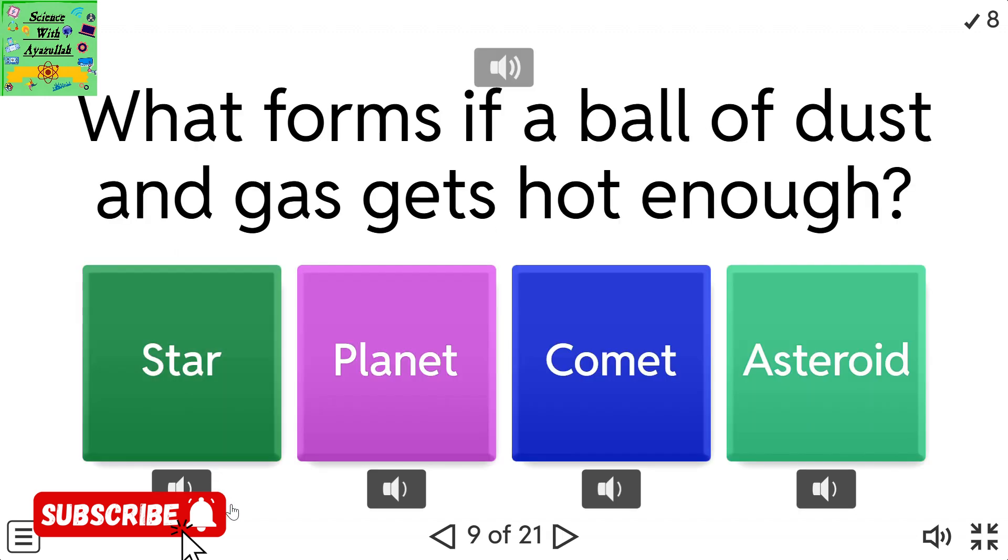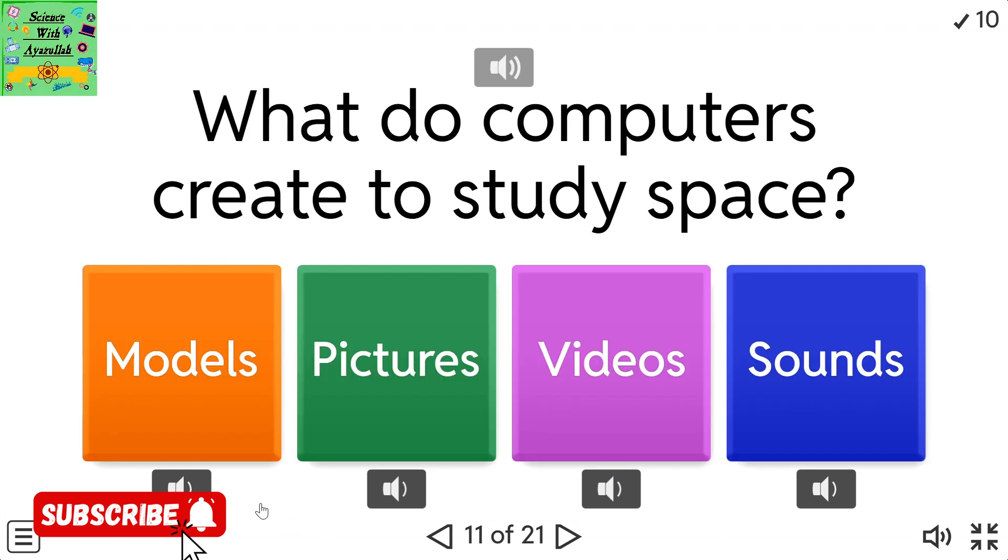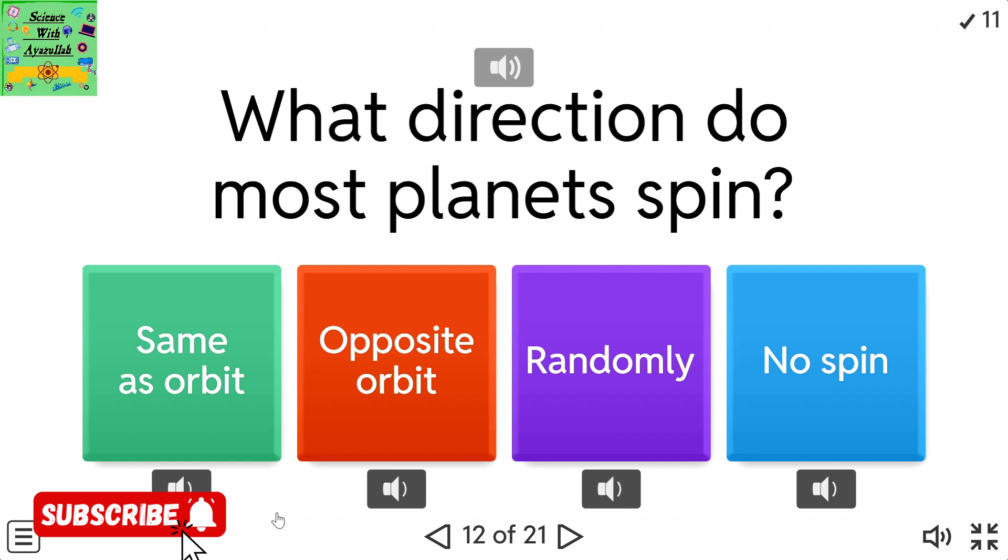What forms if a ball of dust and gas gets hot enough? Star, Planet, Comet, or Asteroid. What is the solar system's shape described as? Flat, Round, Square, or Irregular. What do computers create to study space? Models, Pictures, Videos, or Sounds. What direction do most planets spin? Same as orbit, Opposite orbit, Randomly, or No spin.